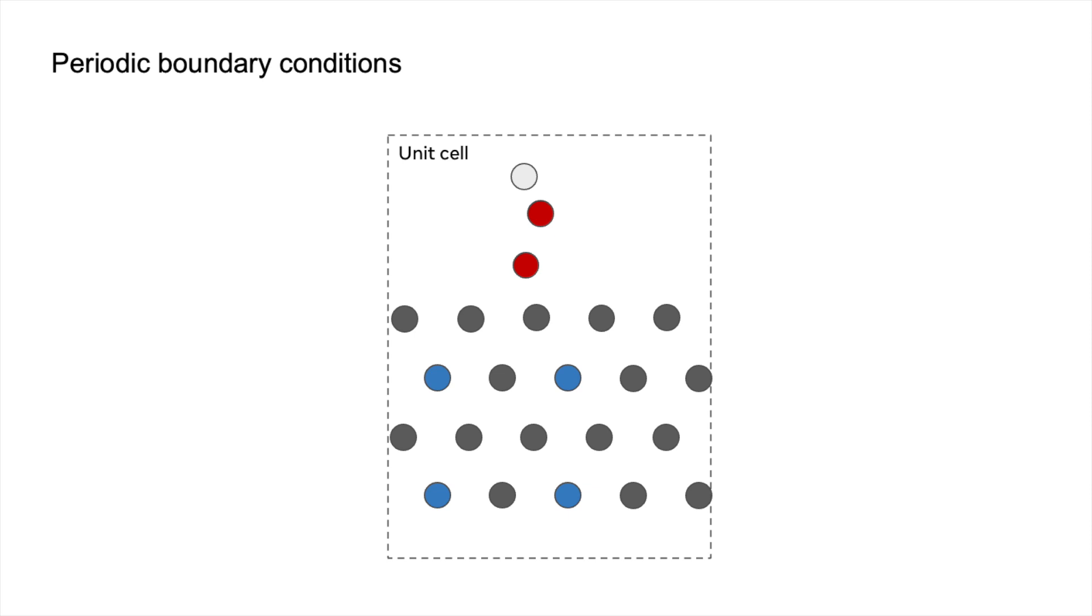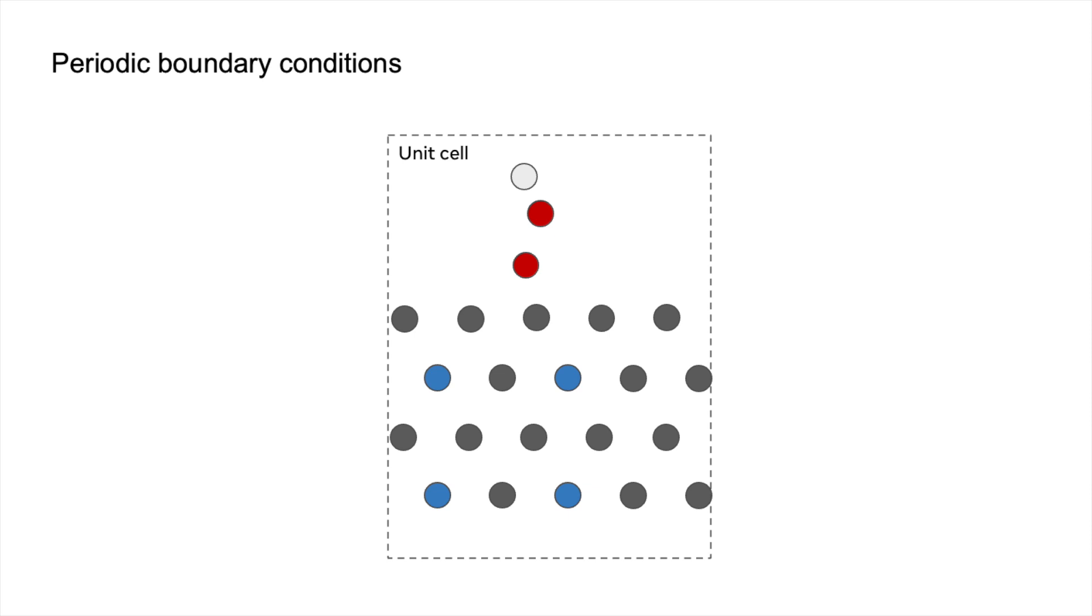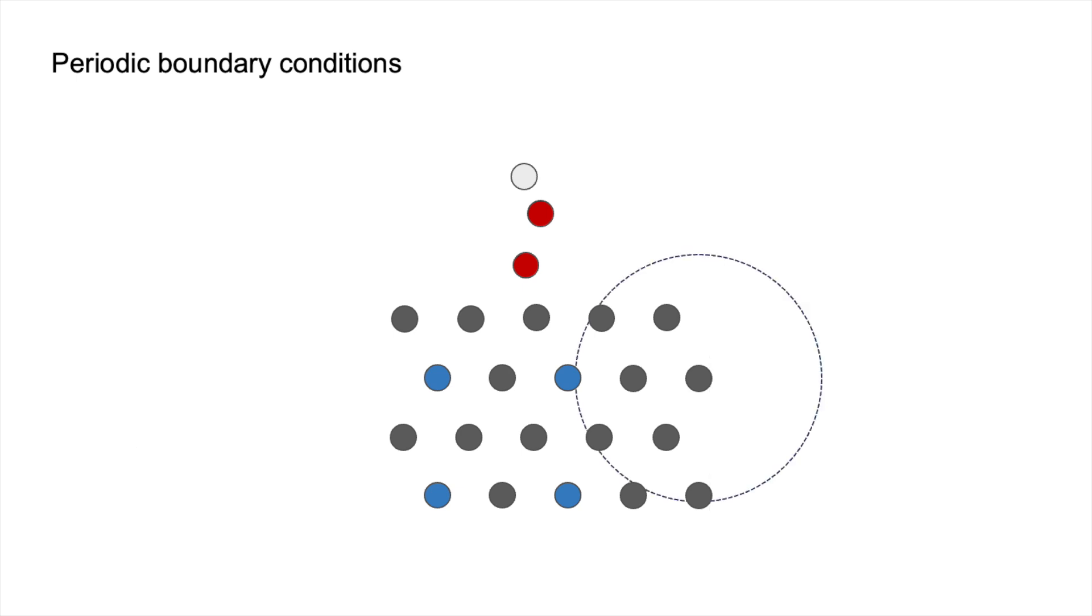So another thing you need to consider when you're thinking about how do I construct a neighboring graph is periodic boundary conditions, or PBC. And when people talk about PBC, what they mean is that unit cell, which I was talking about, is repeated over and over again in the x and y directions. So if you have an atom like this, and you want to just look at its neighbors, you can't just consider the atoms that are in its unit cell. You need to consider the atoms which are in its neighboring unit cells as well, because those might also be within your cutoff radius or be one of the k closest atoms. And if you're using the OpenCatalyst repo, this will all be done for you automatically, you won't have to worry about it. But it's just something to be aware of.